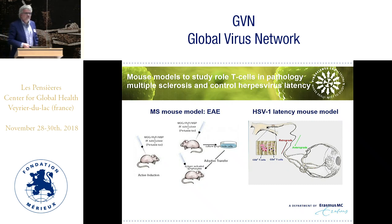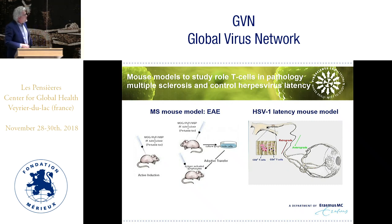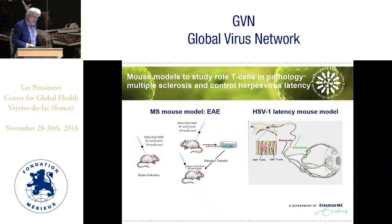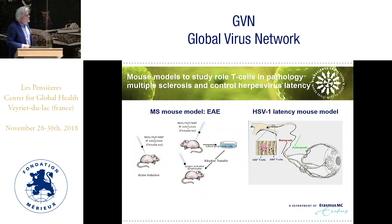What people have been studying with regard to these herpes viruses is the link between Epstein-Barr virus and MS, but also a lot of work has been done on MS mouse models as well as mouse models with regard to latency of herpes virus type 1.